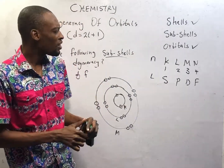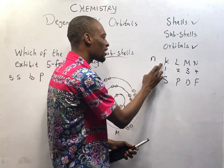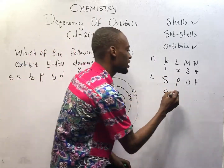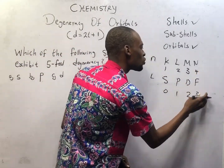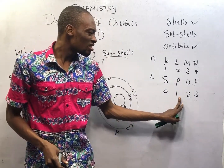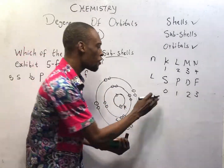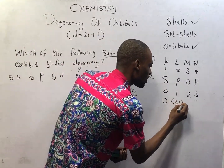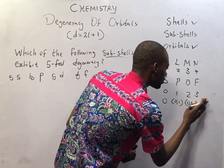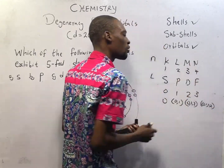Now, the azimuthal quantum number is always 1 lesser than the principal quantum number, which means for K shell (n=1), the azimuthal quantum number for S will be 0. For L shell (n=2), it ends at 1, so you have 0 and 1. For M shell (n=3), you have 0, 1, and 2. For N shell (n=4), you have 0, 1, 2, and 3 — always 1 less than the principal quantum number.